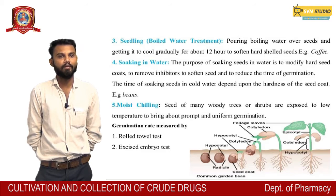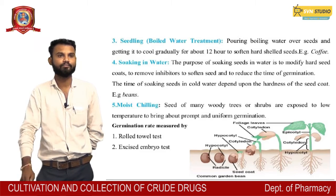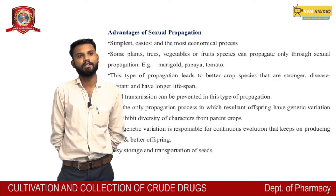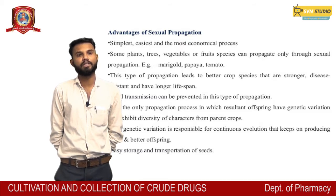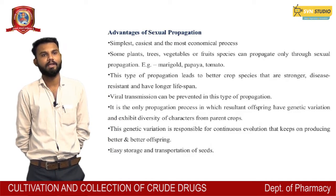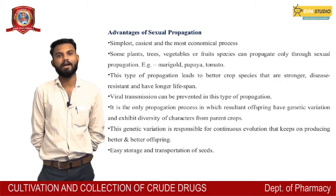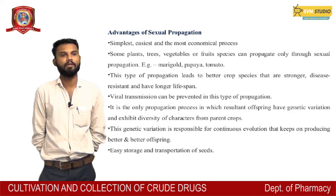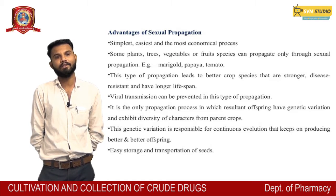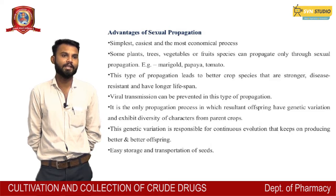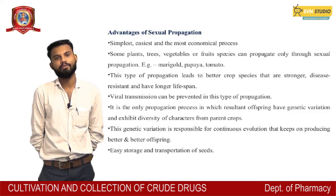Germination rate is measured by the rolled towel test and the excised embryo test. Advantages of sexual propagation: it is the simplest, easiest, and most commercially used process. Some plant trees, vegetables, or fruit species can be propagated only through sexual propagation, e.g., marigold, papaya, tomato. This type leads to better crop species that are stronger, disease-resistant, and have a longer lifespan. Viral transmission can be prevented. It is the only propagation process where offspring have genetic variation and exhibit diversity of characters from parent crops. This genetic variation is responsible for continuous evolution, producing better offspring.